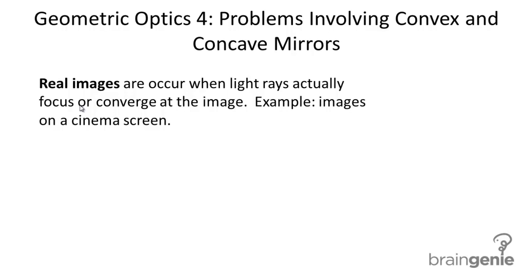So in this case the light source is from the projector and the light rays actually converge at the image that you see on the screen. Another example includes images where the object is beyond the focal point of a convex mirror.